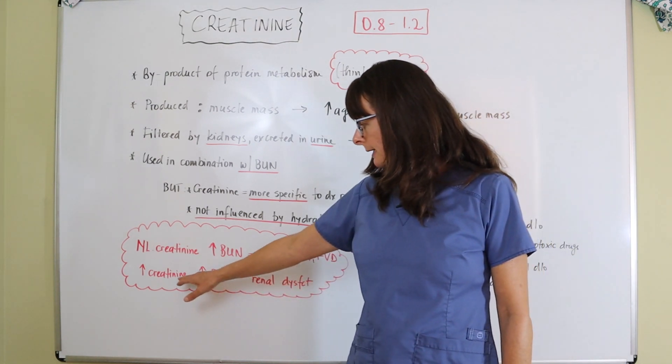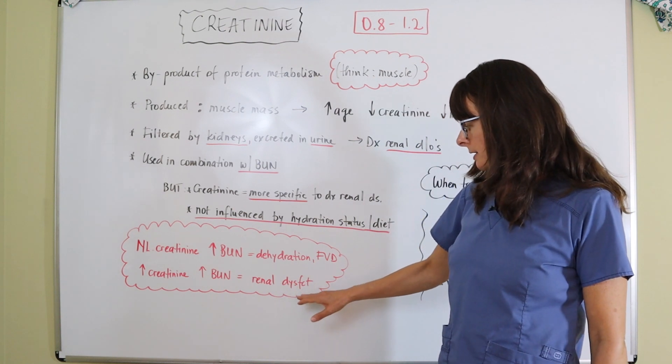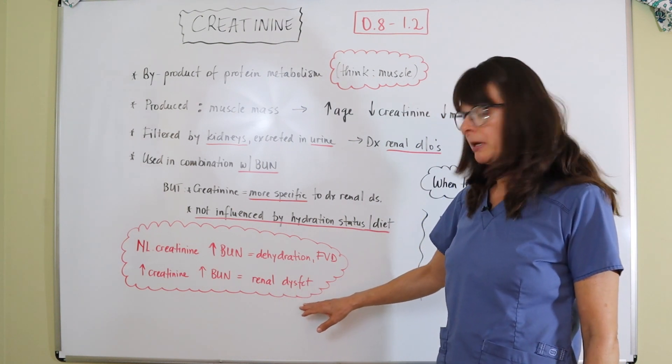But if both creatinine and BUN are elevated, that usually means that there is something going on with the patient's kidneys.